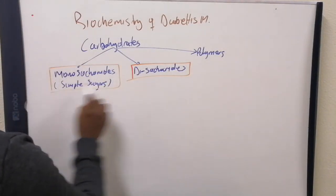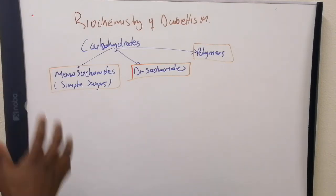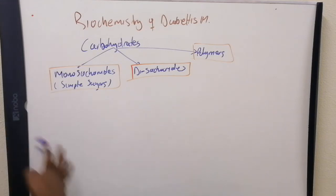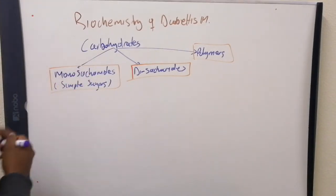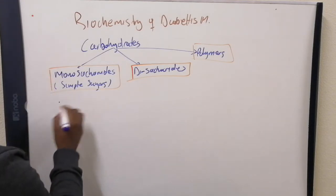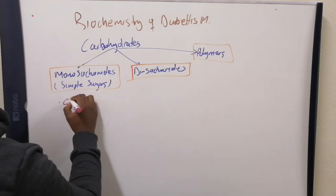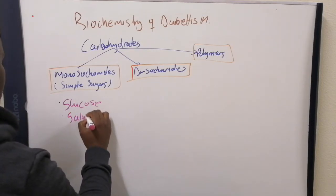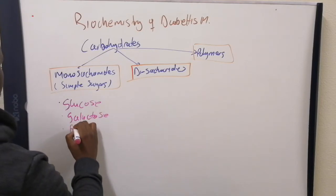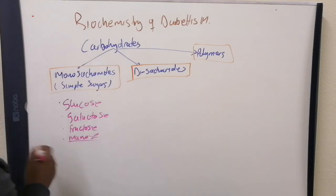To move from a monosaccharide to a polymer, you need the simplest units linked together — like bricks and cement to build a house. The monosaccharides we know of include glucose, the most famous and most common one, then galactose, fructose, and lastly mannose, though we won't talk much about mannose.